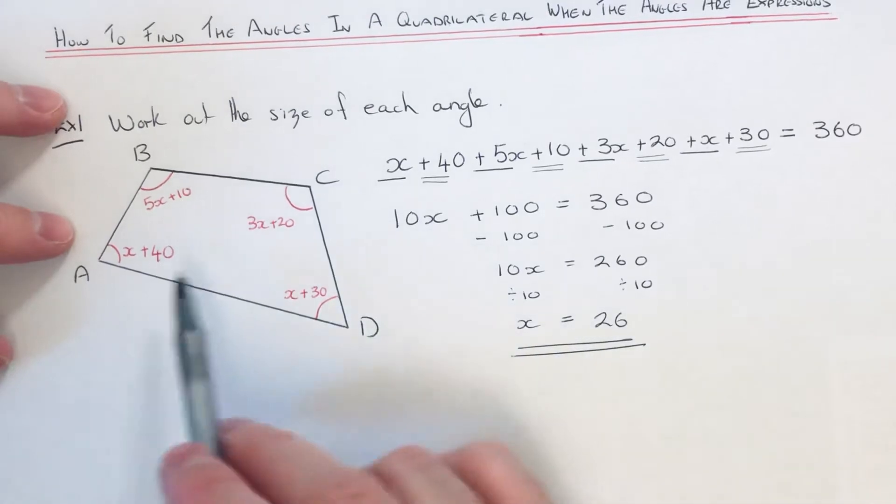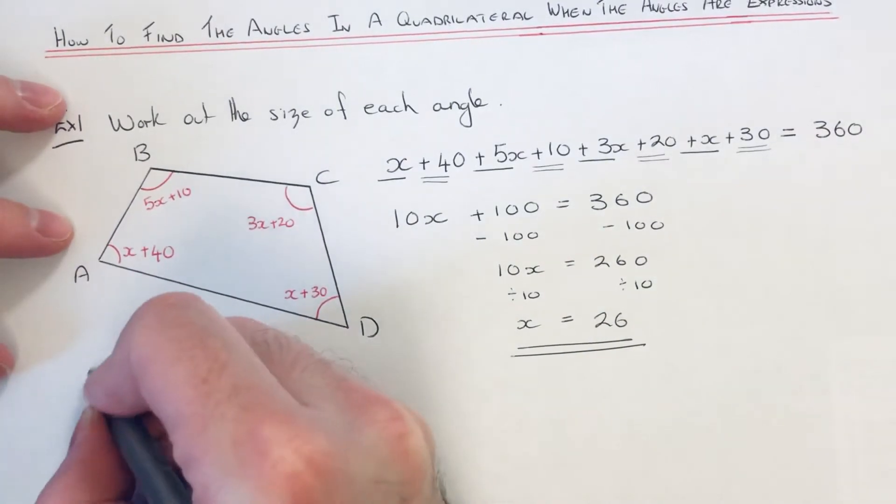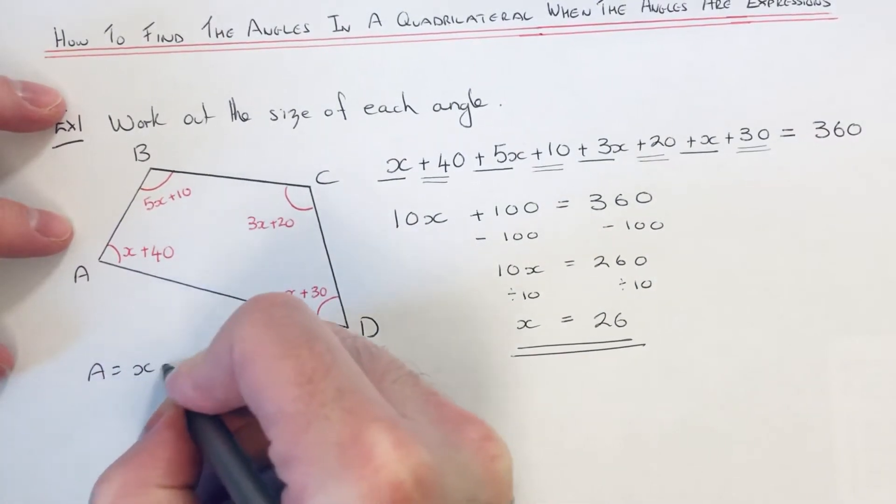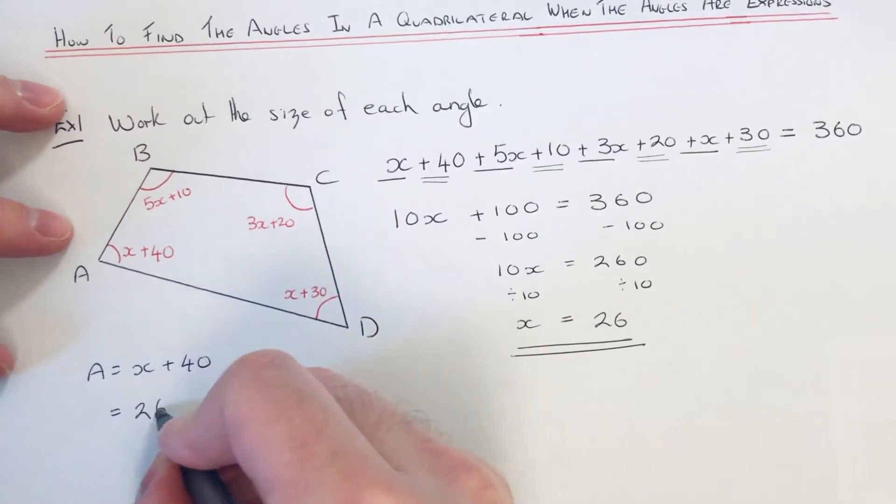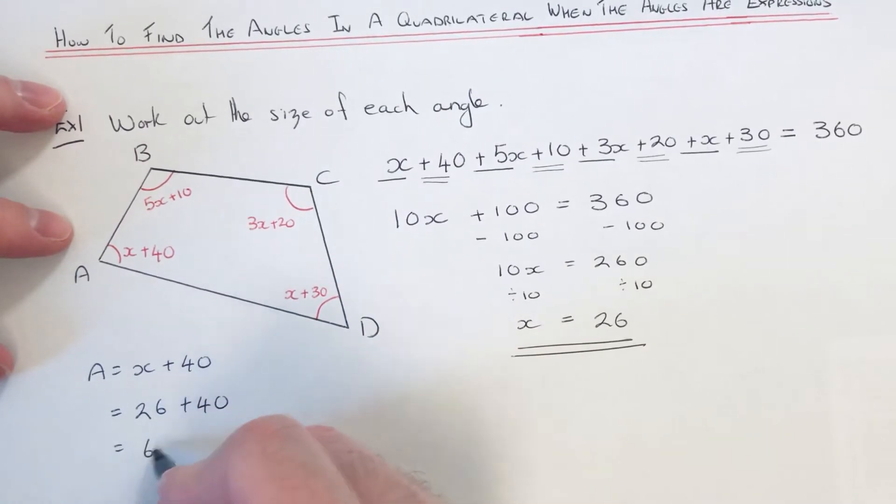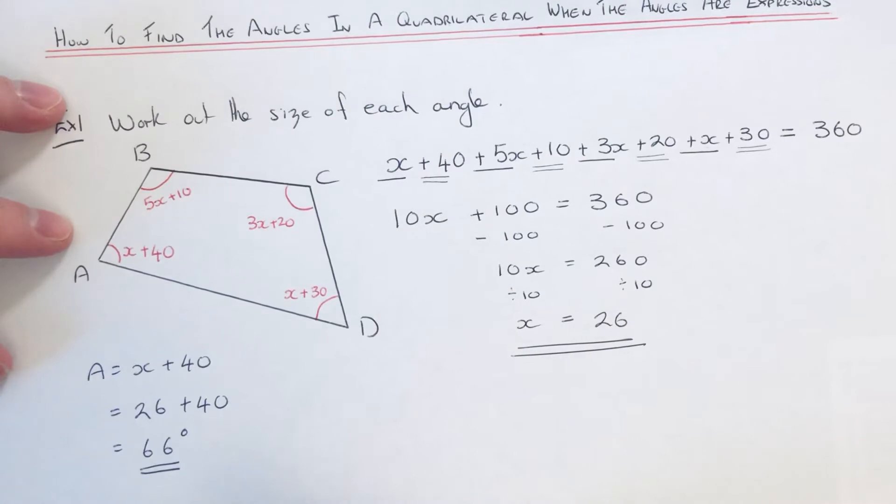So we can now substitute this into the four angles to work out each one. Let's start off with angle A. So angle A is x add 40, so that's 26 add 40, which is 66. So that is angle A.